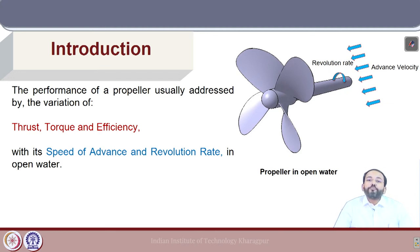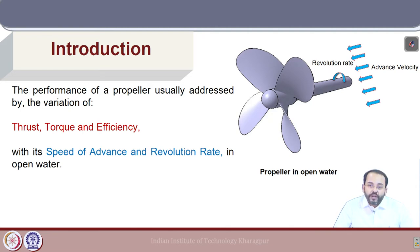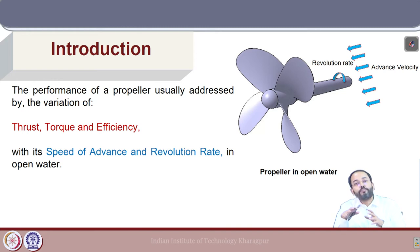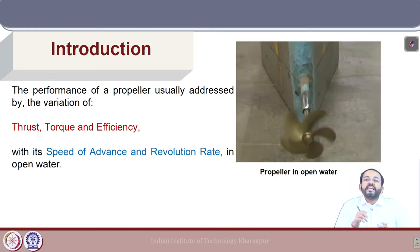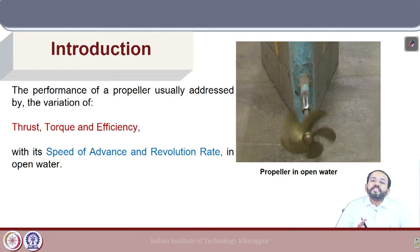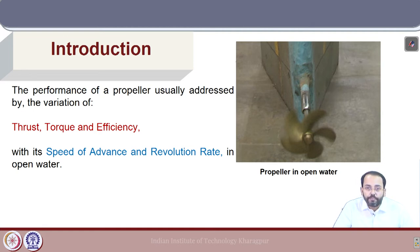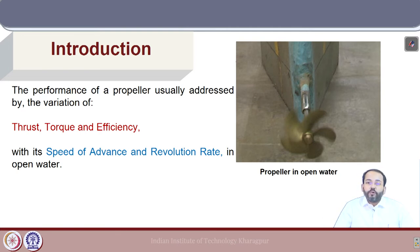In an actual open water test, the propeller is connected to a shaft and a body is placed behind the propeller which pushes it forward. So in the open water test configuration, the propeller is put forward of the body and attached to the shaft in a reverse way. We will go into details of this setup when we discuss propeller model testing.